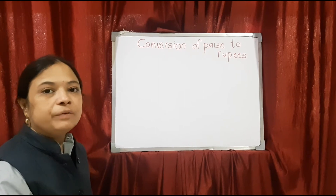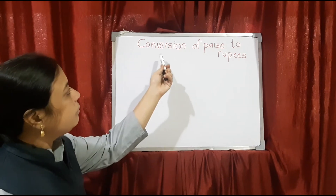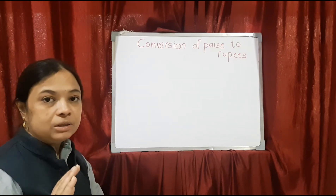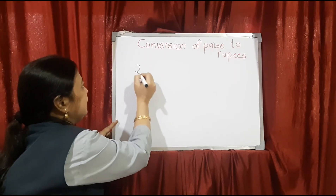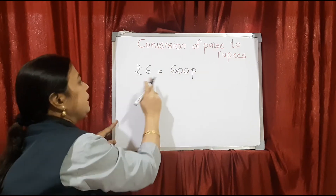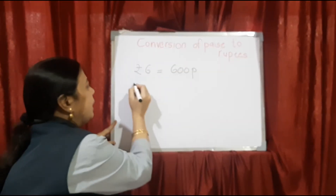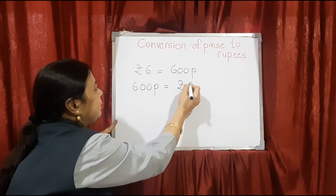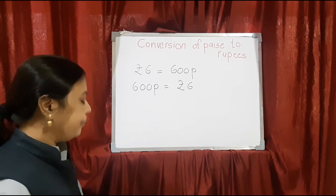Children, now we had just learned how to convert rupees into paise. Now what we are going to learn is conversion of paise to rupees — meaning paise will be given to you and you have to convert into rupees. For example, 6 rupees means 600 paise, so 6 rupees is equal to 600 paise. You can write it either way — both are the same.